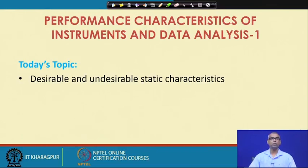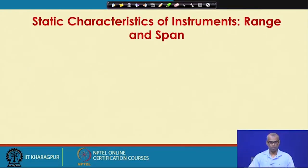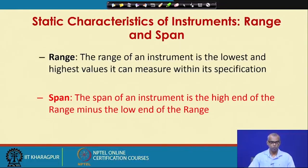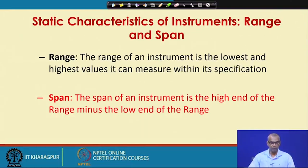Today's topic is Desirable and Undesirable Static Characteristics. There are various static characteristics, and we will go through them one by one. First, let us talk about two terms: range and span of instruments. The range of an instrument is the lowest and highest value it can measure within its specification. The span is the high end of the range minus the low end of the range — the difference between these two values.